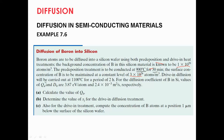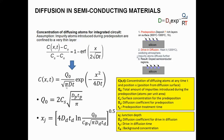The drive-in diffusion will be carried out at 1100°C for a period of two hours. For the diffusion coefficient of boron in silicon, D₀ and Qd are given. We want to calculate Q₀, which is found using the equation for total amount of impurity introduced during pre-deposition, defined in terms of Cs, Dp, and tp.